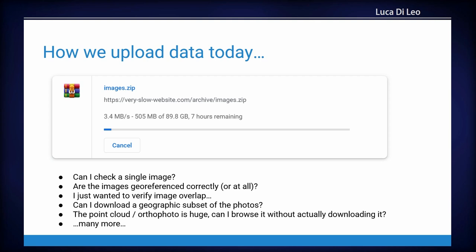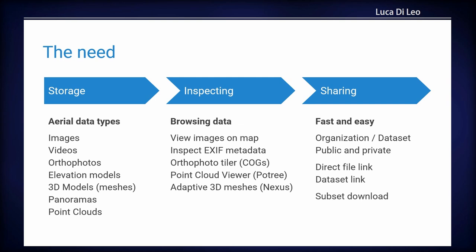Moreover, you have very large files like point clouds and meshes and orthophotos that should be able to be viewed and inspected directly in the browser without downloading like 20 gigs of the file. So this is the need that we identified. We have all the aerial data types that we actually support: images, videos, orthophotos, elevation models, 3D models, panoramas, and point clouds. And what we want to do is browsing data, inspecting this data and be able to view the orthophotos and the meshes directly in the browser. We looked up for commercial solutions and there were many commercial solutions, but we hate commercial solutions.